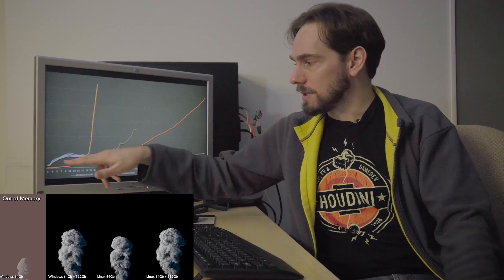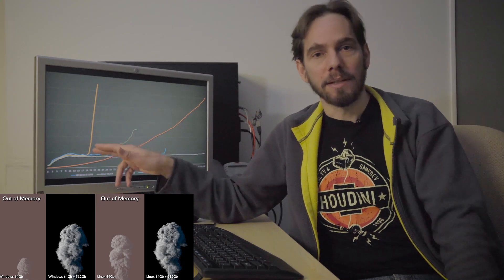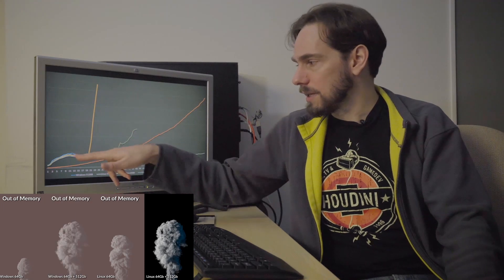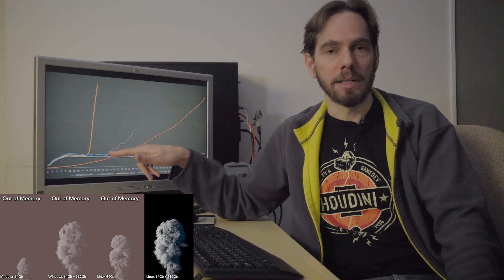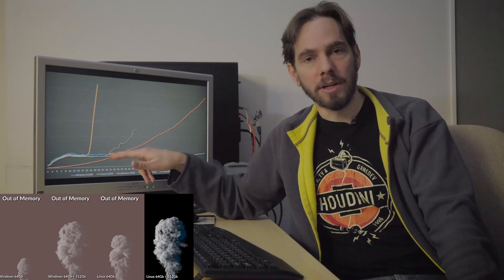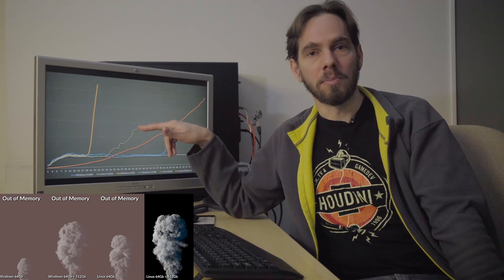We can see with the 64 gigabyte Windows configuration, which is yellow, at a certain point we run out of memory and we start swapping and things become horribly slow and it eventually crashes. Similarly, the 64 gig Linux configuration has a bit better memory management and so it lasts longer before it runs out of memory and swaps. It also does better with swapping than Windows did, but again it eventually just crashes and gets a lot slower per voxel.